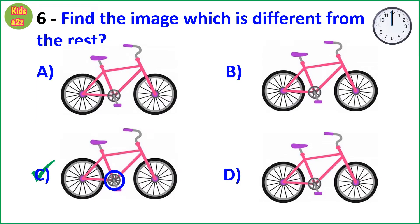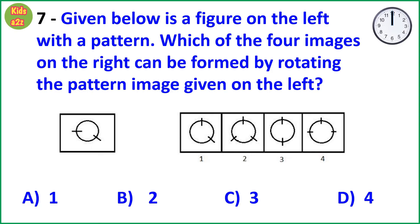Question 7: Given below is a figure on the left with a pattern. Which of the 4 images on the right can be formed by rotating the pattern image given on the left? Time starts.